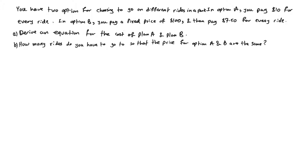The first part of the question tells us to derive an equation for the cost of plan A and plan B. We can see that for plan A, every time you buy a ticket you pay $10. So when you buy two tickets you pay $20, when you buy three you pay $30. For plan B, you pay a fixed price of $100, and when you buy one ticket you pay a total price of $107.50. Our dependent variable is the cost and our independent variable is the number of tickets.